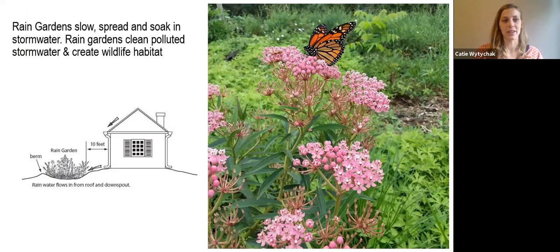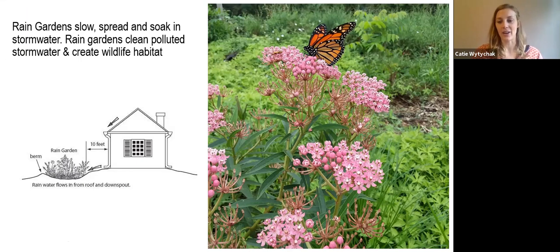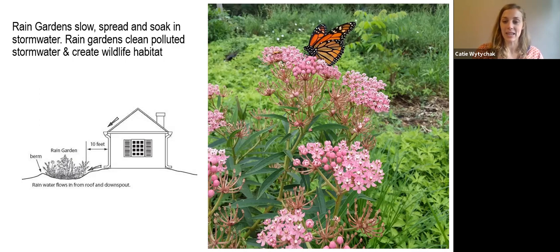So what is a rain garden? A rain garden will slow, spread, and soak in stormwater. And by doing that, they're cleaning up polluted stormwater. And because they're full of native plants, they also are great wildlife habitat. You can see in this picture that the garden is sunk down a little bit — it has this sort of saucer sunken-down shape. That's so that it can hold stormwater and then allow that stormwater to slowly soak down into the ground. And when water goes through the ground, it naturally becomes filtered clean because there are little microorganisms in the soil. Those microorganisms will clean up dirty water and send the clean water on its way out into our rivers.